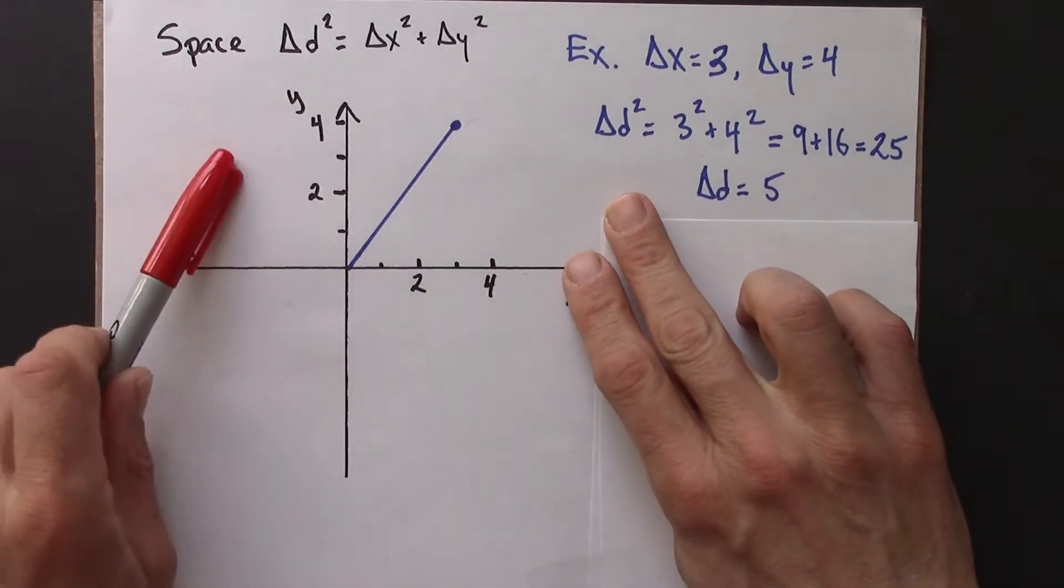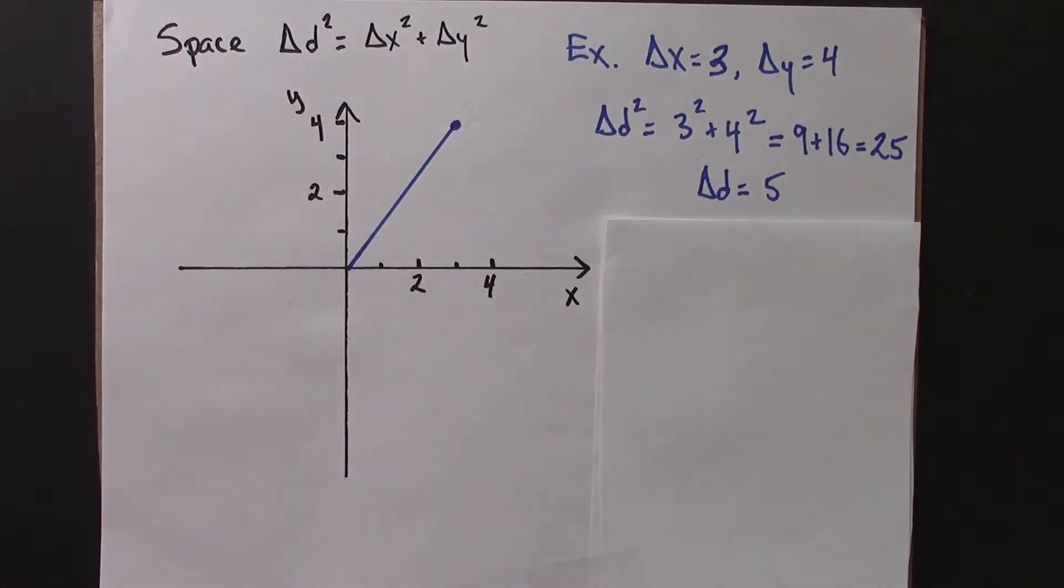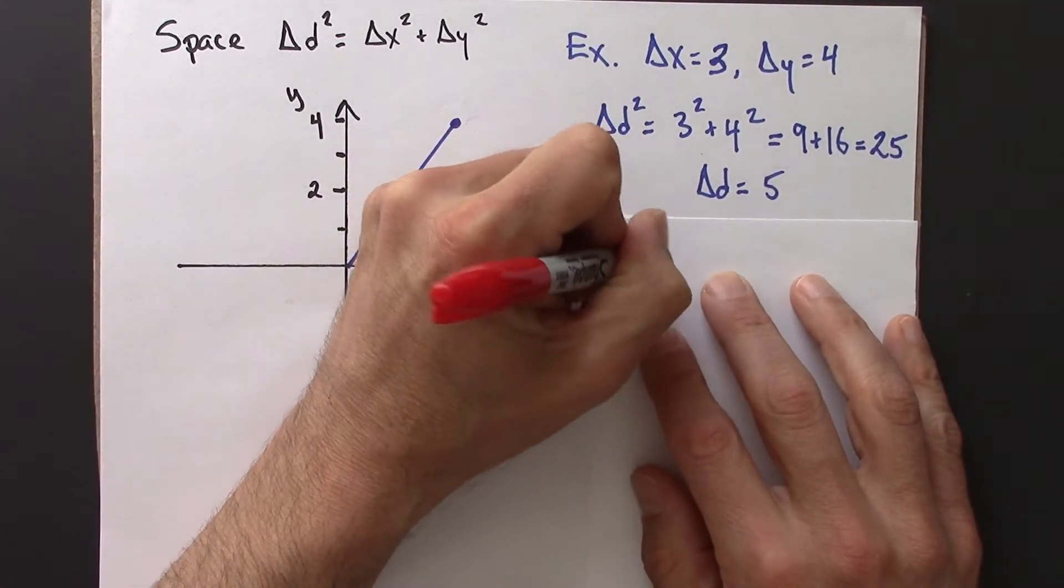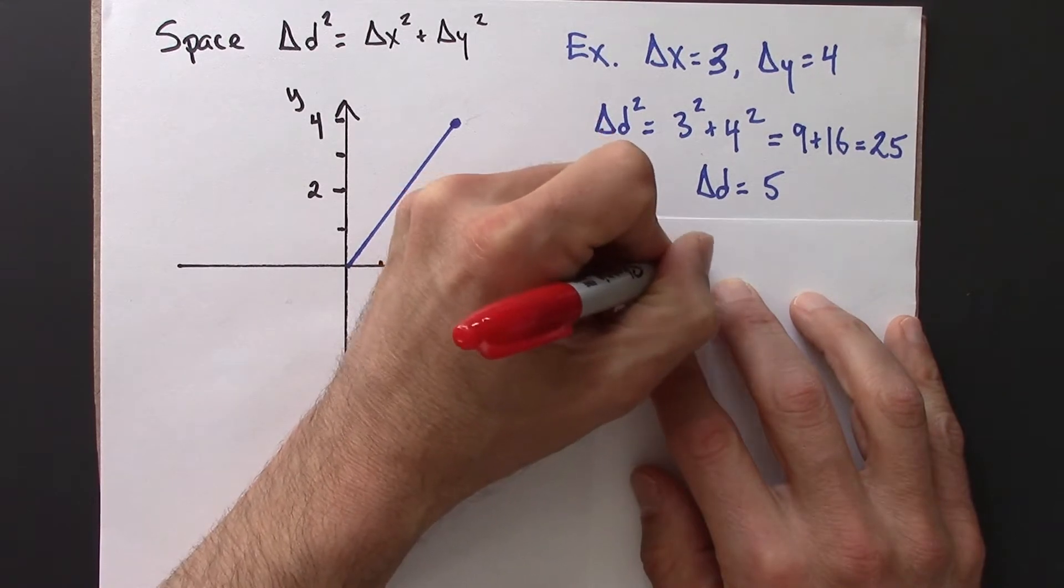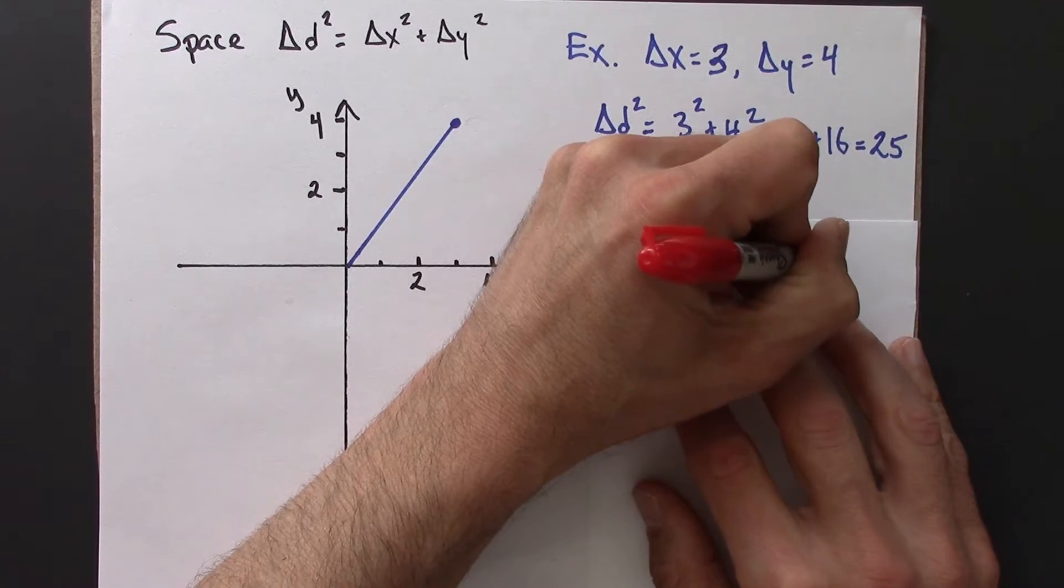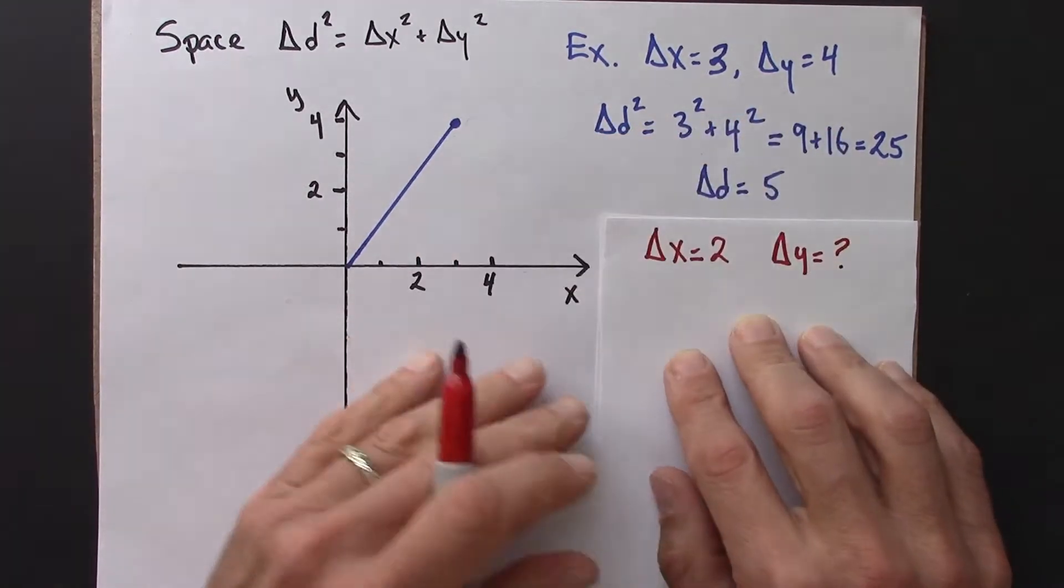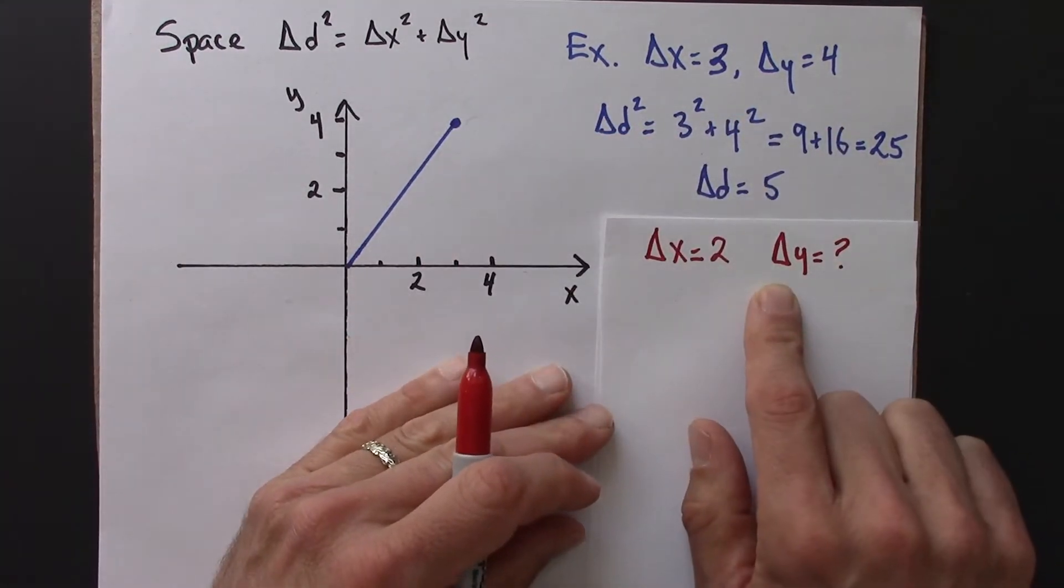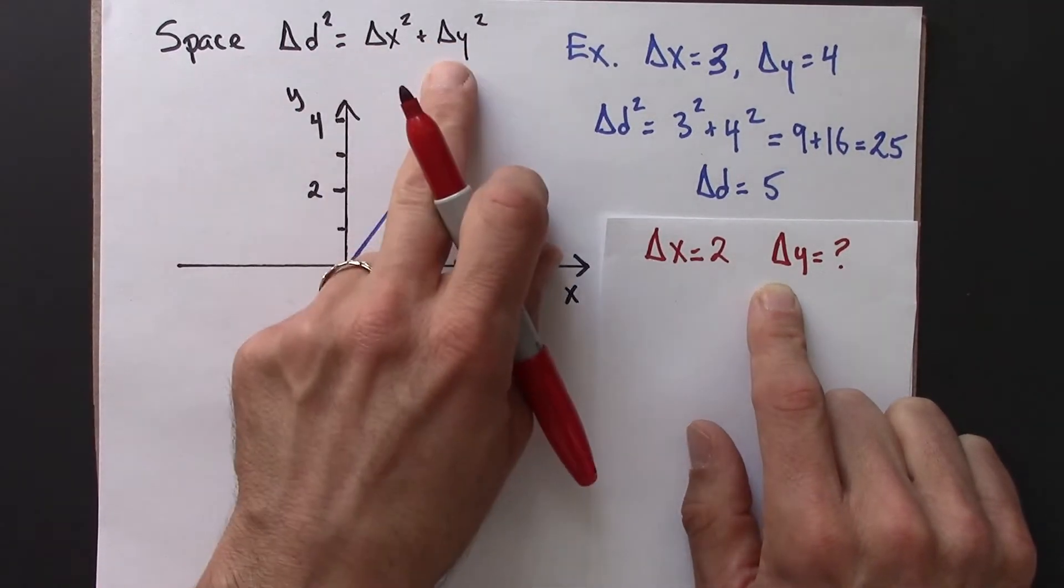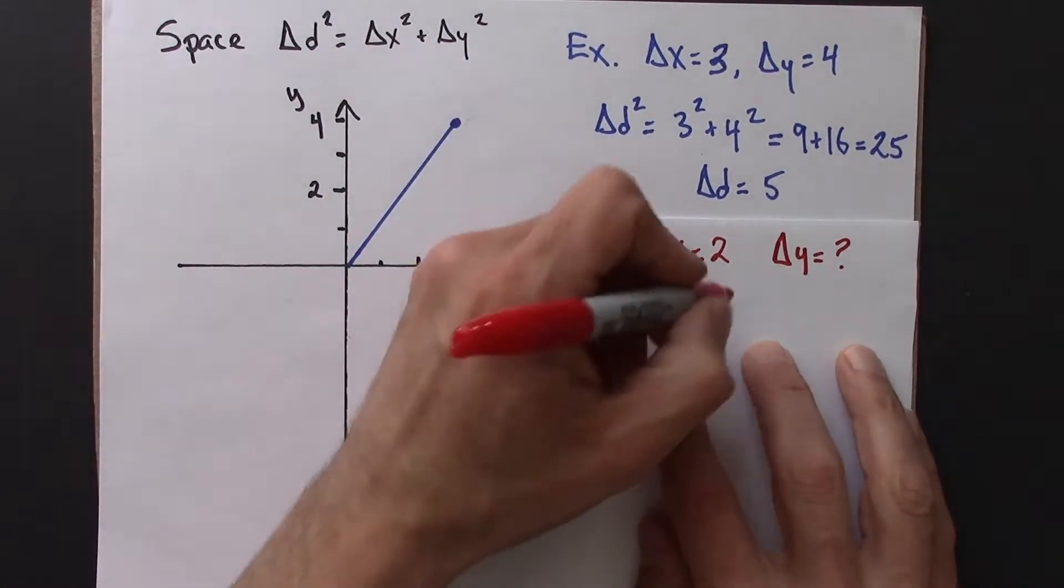Alright, so let's investigate that idea a little bit further. And let's say, suppose there happened to be some coordinate system where delta x was 2. And then I wonder, in that coordinate system, what would delta y be? So I can use this formula and solve for delta y.